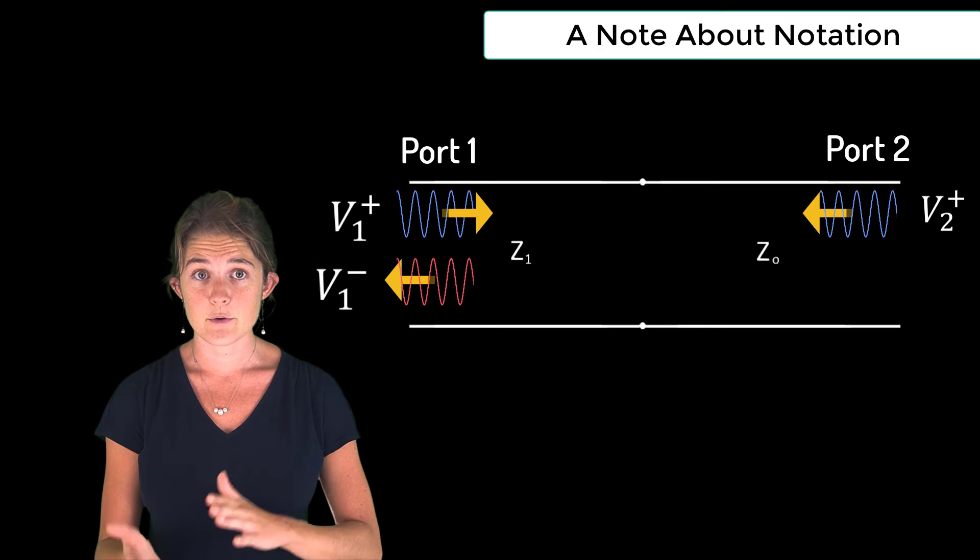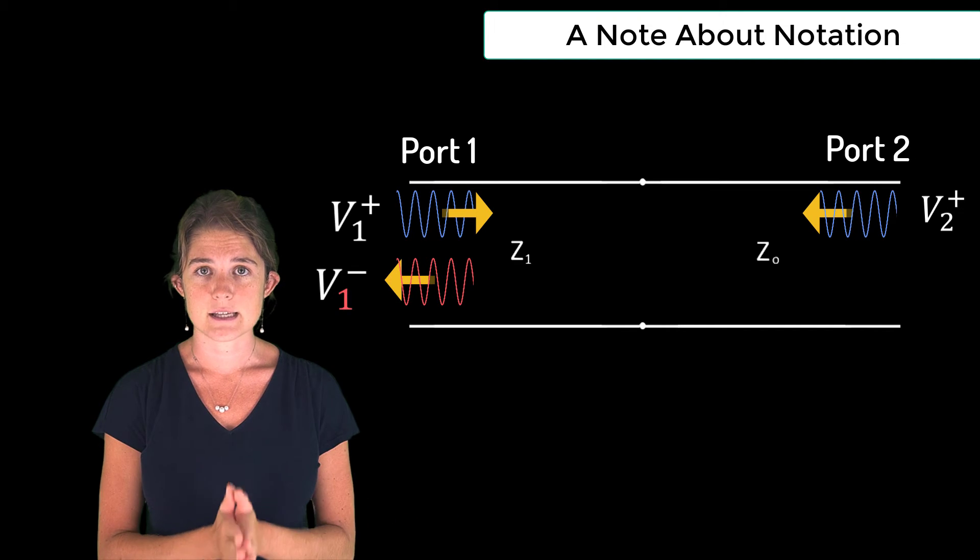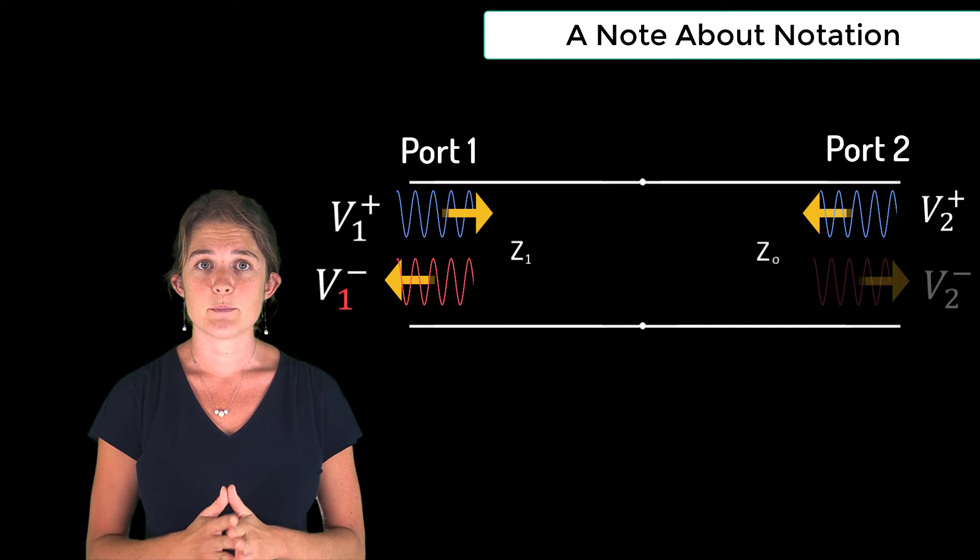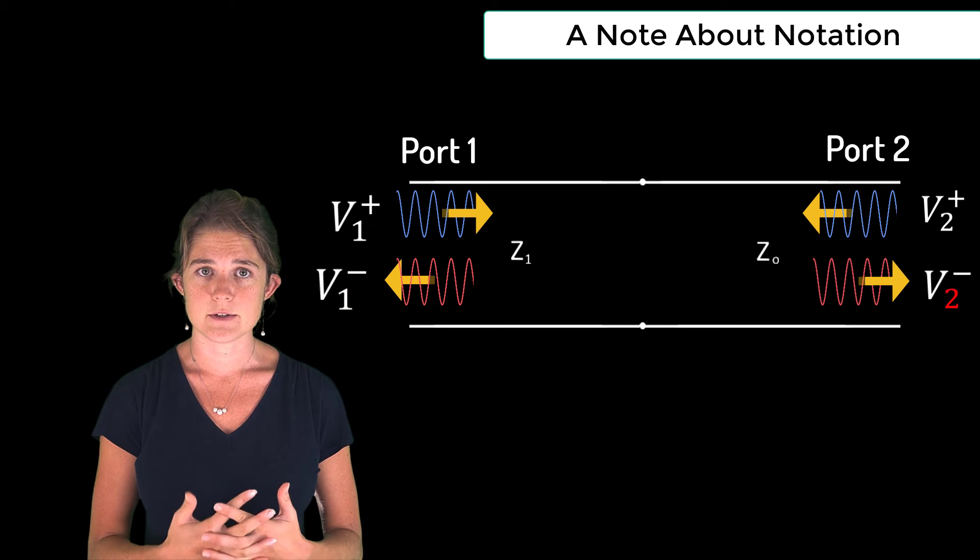Similarly, if an output wave is output at port 1, it has a subscript of 1. And if it's output at port 2, it has a subscript of 2.